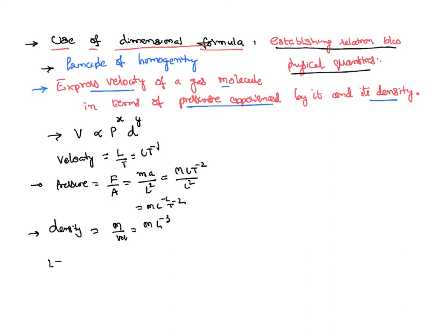Now I can write this dimensional formulas in the above equation. LT^-1 on the LHS is equal to pressure ML^-1T^-2 power of x, density ML^-3 power of y.